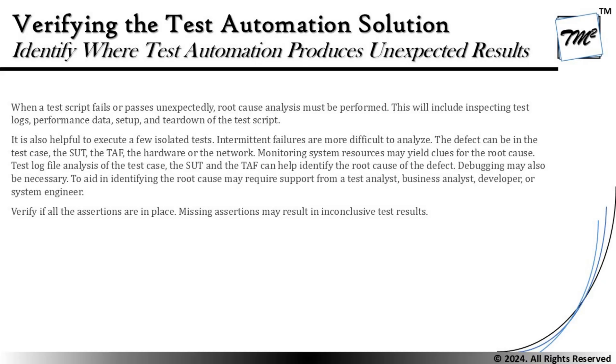Isolation is the very first approach when a failure happens. The second thing to understand is that intermittent issues are very difficult to analyze because we don't have any proofs and cannot reproduce why that failure occurred. The defect can be in the test case, the SUT, the framework, the hardware, or the network itself. Monitoring system resources may yield clues for the root cause. Analysis of test logs, the SUT, and the TAF can help identify the root cause, and debugging may also be necessary.